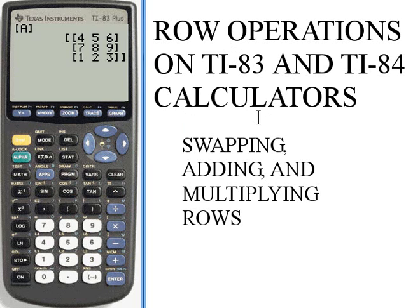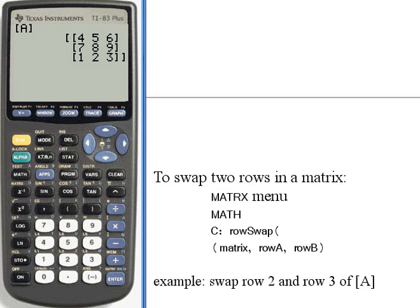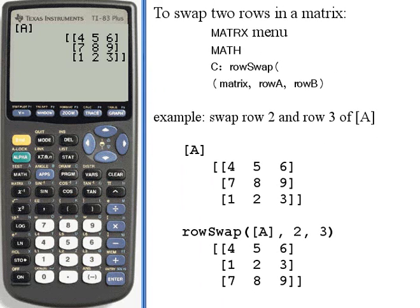We're going to be dealing with matrices and we'll learn how to swap, add, and multiply rows within a matrix. The first operation is swapping two rows in a matrix. On the calculator here I've got matrix A displayed, a 3 by 3 square matrix. For this example I want to swap rows 2 and 3 of that matrix.